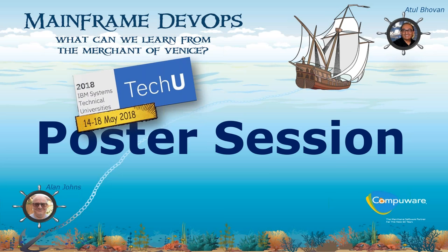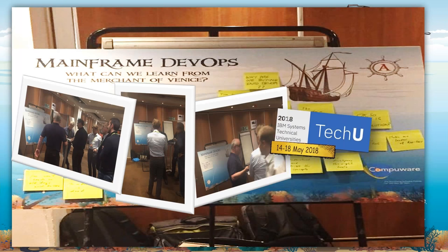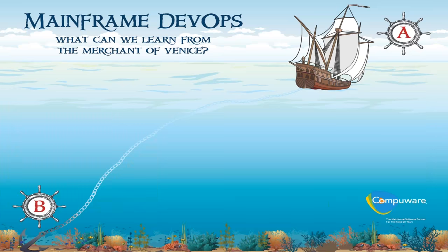One of those sessions we ran there was what we call a poster session, where we gave the attendees the opportunity to discuss the issues they were having on the DevOps platform — mainframe and distributed. The idea was that we wanted to couch the questions and the discussion around DevOps in such a way to make it interesting and make people think a little bit more about what we were discussing. So we couched the questions in the context of a famous Shakespearean play known as The Merchant of Venice.